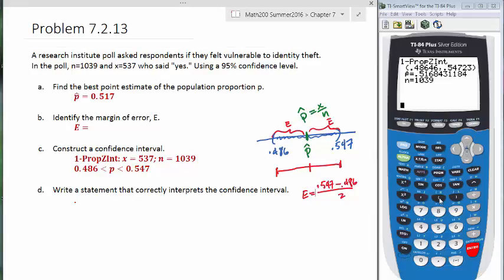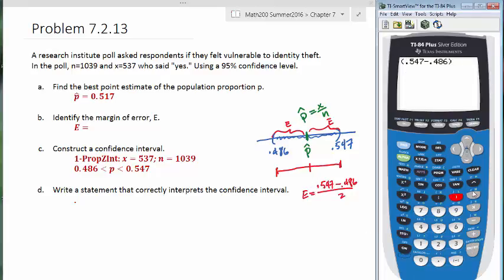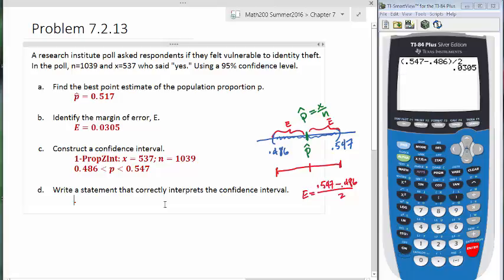To do this properly, I will need parentheses. After we get the numerator, we'll divide by 2 and hit Enter. And then it looks like our margin of error is 0.0305.